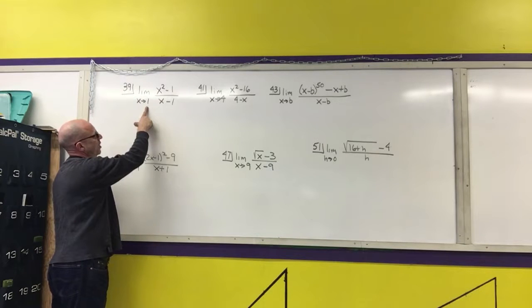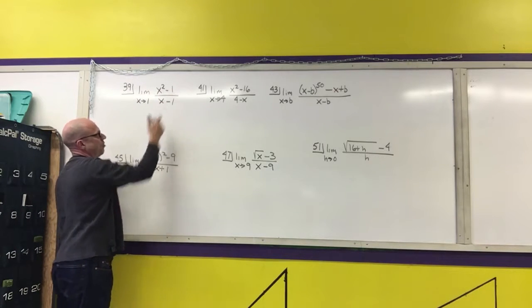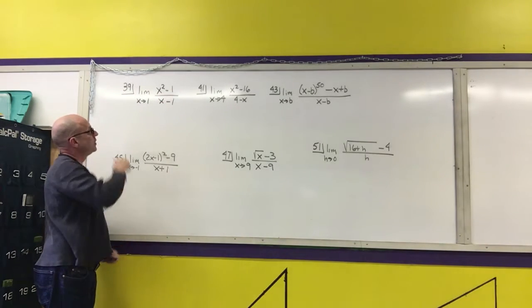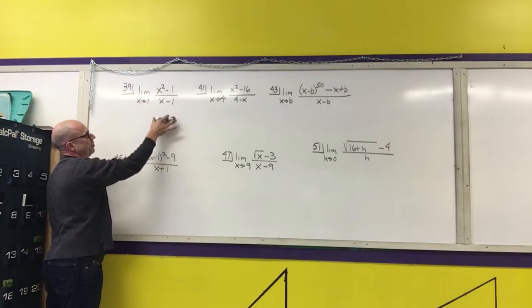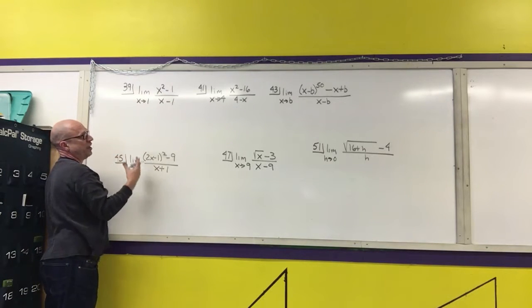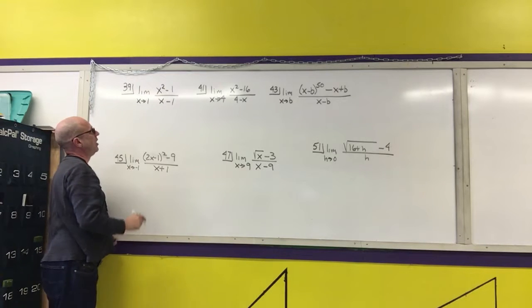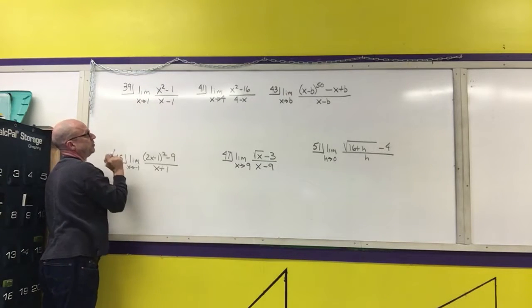Notice if you substitute a 1 into the function, you're going to get 0 over 0, which is undefined. So the first step is, if you see something like this, is you want to try to factor it to see if you can cancel out terms to get rid of the denominator.